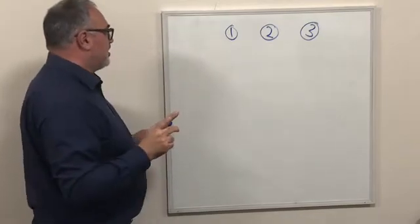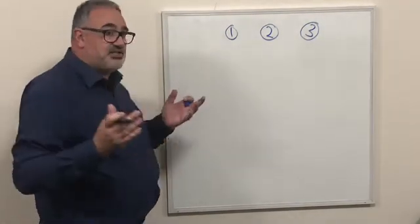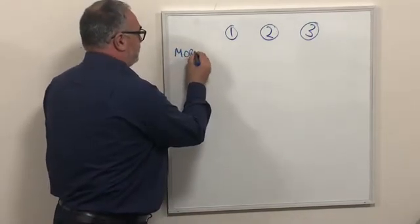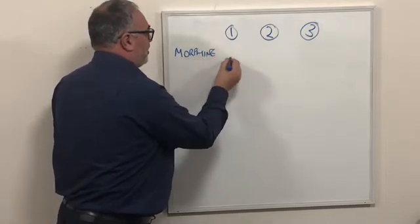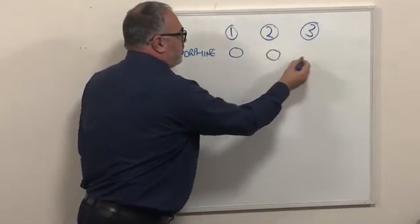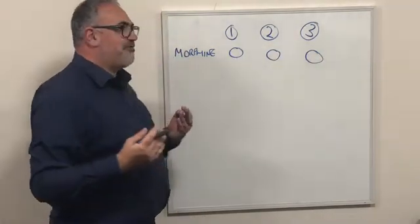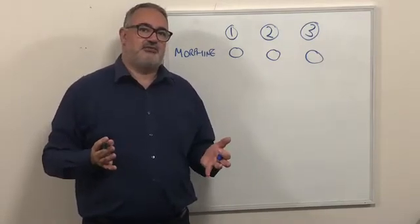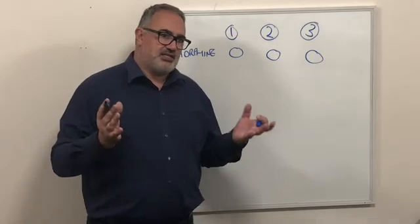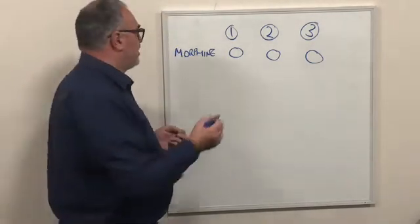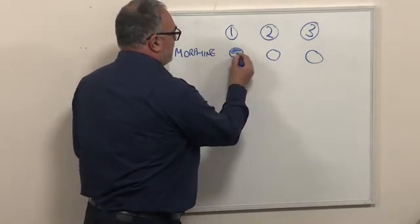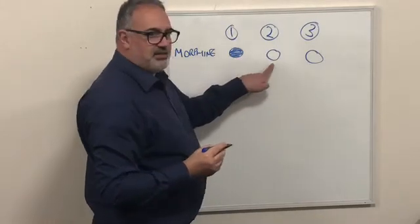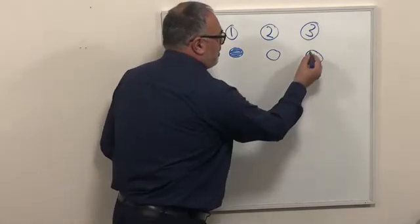Now if we take a drug, let's start off with our gold standard opioid, let's take morphine. Morphine will have an affinity, a profile of activity against a variety of those receptors. So let's just hypothetically say that morphine is fully agonistic in opioid receptor one, doesn't do anything in opioid receptor two, and is a partial agonist of opioid receptor three.